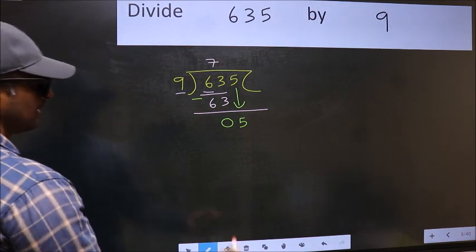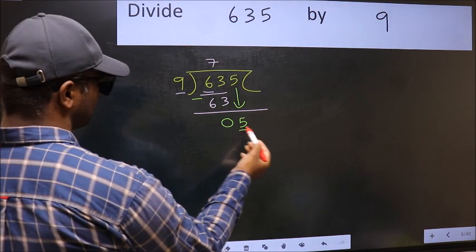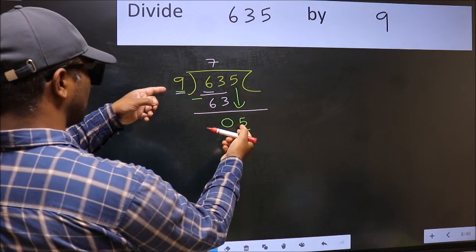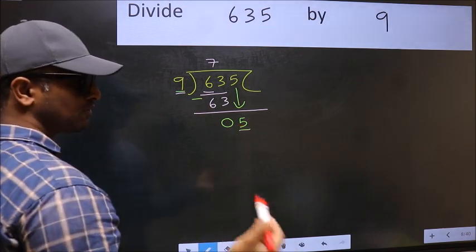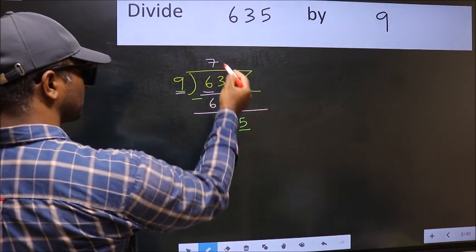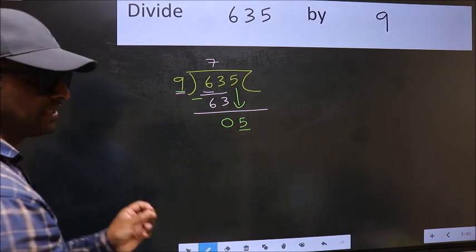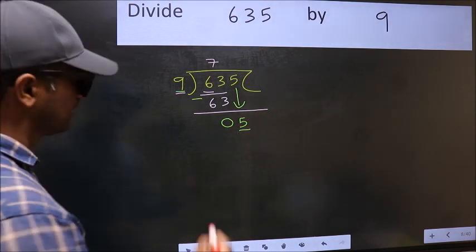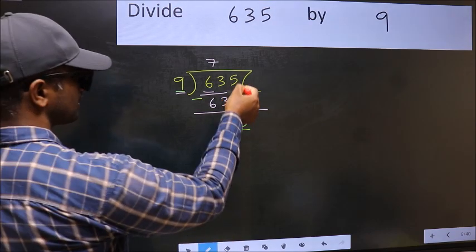Here we have 5 and here 9. 5 is smaller than 9. What many do is they directly put the decimal point and take 0, which is wrong. Why is it wrong? Because you just brought this number down.